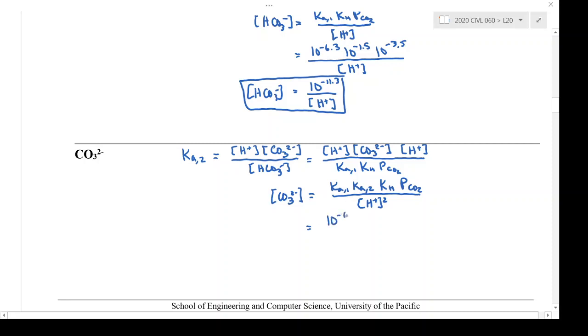So this is 10 to the minus 6.3, we have 10 to the minus 10.3, 10 to the minus 1.5, 10 to the minus 3.5, over H plus squared, or 10 to the minus 21.6 over H plus squared.